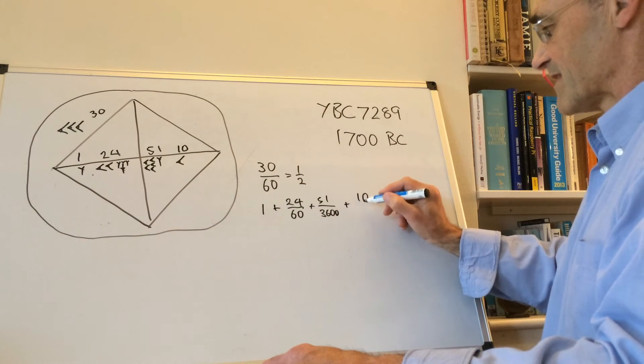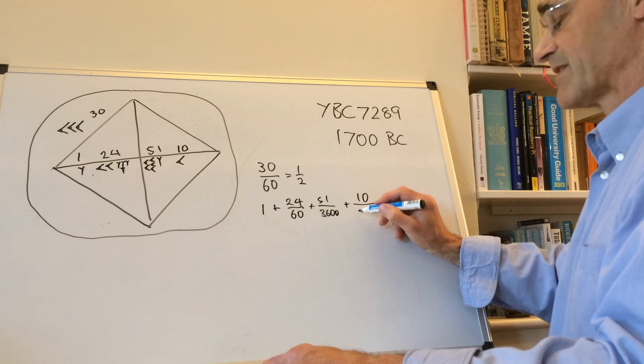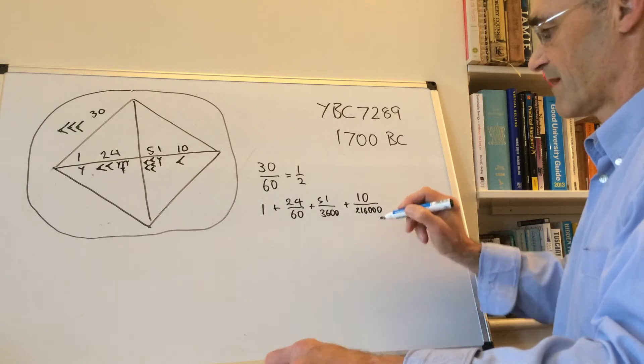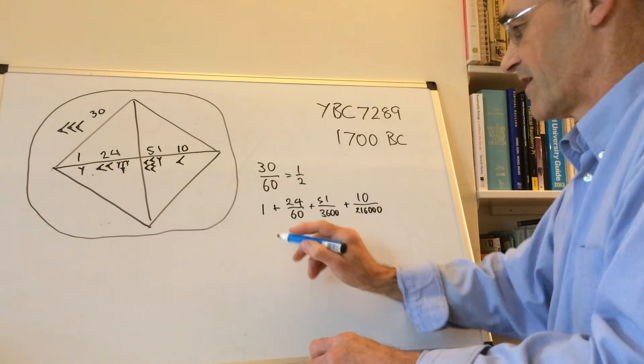And this third place is 10 divided by 60 times 60 times 60, which is 216,000.